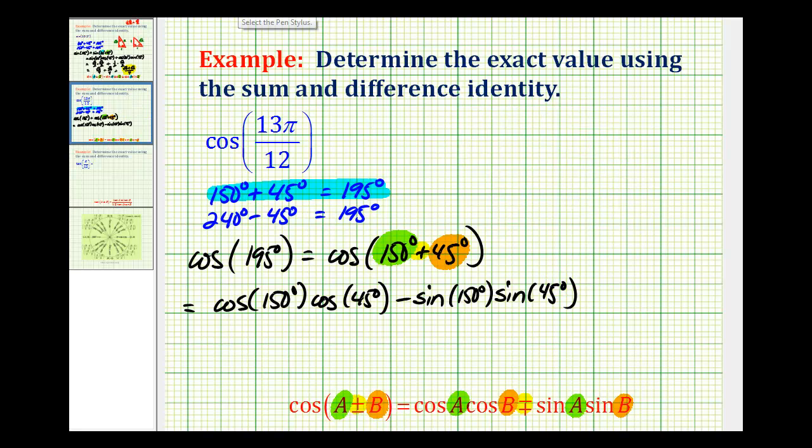Now we can use a unit circle or we can sketch reference triangles to evaluate these trig functions. Let's go ahead and sketch our reference triangles. So for 45 degrees it would be here, therefore our reference triangle would be here with 1, 1, square root 2. And then for 150 degrees, we'll be over here in the second quadrant where the reference angle would be 30 degrees. So we'd label this 1, 2, and this would be negative square root 3.